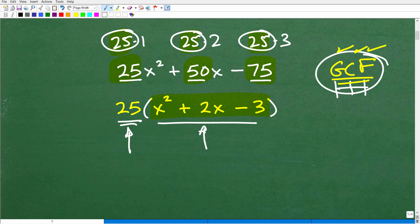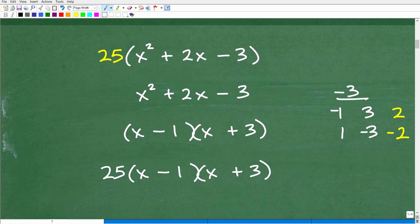So a factor to this trinomial is, in fact, 25. But now we have to deal with the remaining trinomial, and that is x squared plus 2x minus 3. And of course, this is going to be much easier to deal with than 25x squared plus 50x minus 75. So my question to you is, can you factor x squared plus 2x minus 3? You definitely need to be able to do things like this, or you will not be able to pass algebra. Factoring is used everywhere throughout an algebra course.